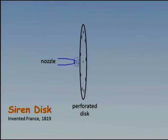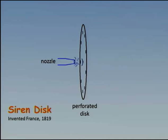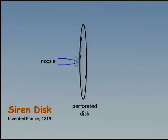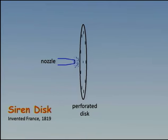This cartoon illustrates the principle behind a siren disc invented back in 1819. You have a source of an air jet, such as a nozzle blowing air, on a spinning disc. This disc has perforations around the circle. As the holes go past the nozzle, a little puff of air comes out and we get periodic puffs of air. Those periodic changes in air pressure due to the puffs is exactly what sound is all about.